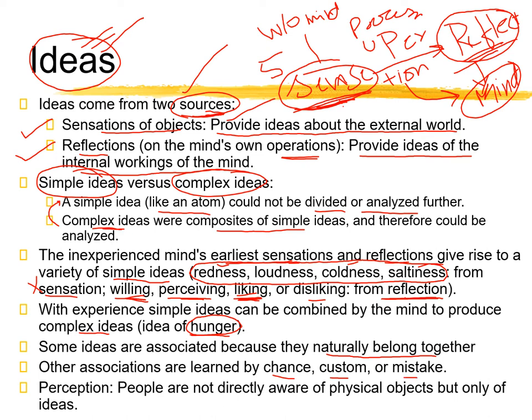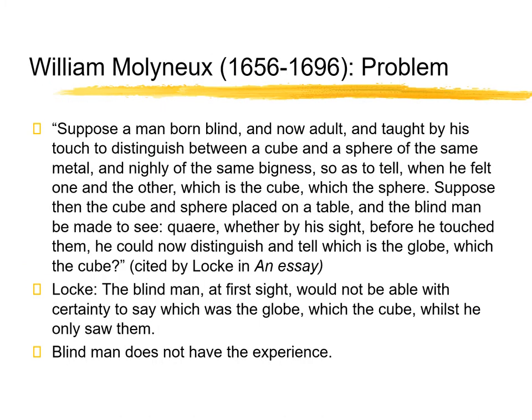Regarding perception, Locke says people are not directly aware of physical objects, but only of ideas. That is perception — you do not perceive the physical object directly; you only receive ideas of it.